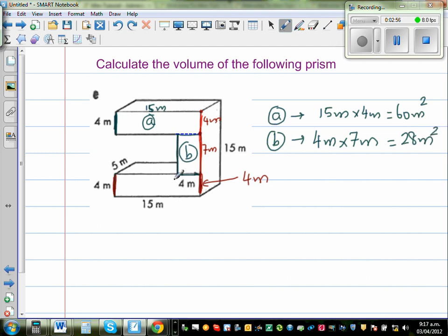Now C has the same shape as A. So C would also have the same dimension, 15 meters by 4 meters. So that is the area of the cross section, 15 meters by 4 meters, which is the same, 60 meters squared.